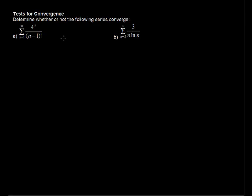In this video I'll talk about the ratio test and the integral test when determining whether or not an infinite series converges. We're asked to determine whether or not the following series converge, and the first one is the sum of 4 to the n over n minus 1 factorial.